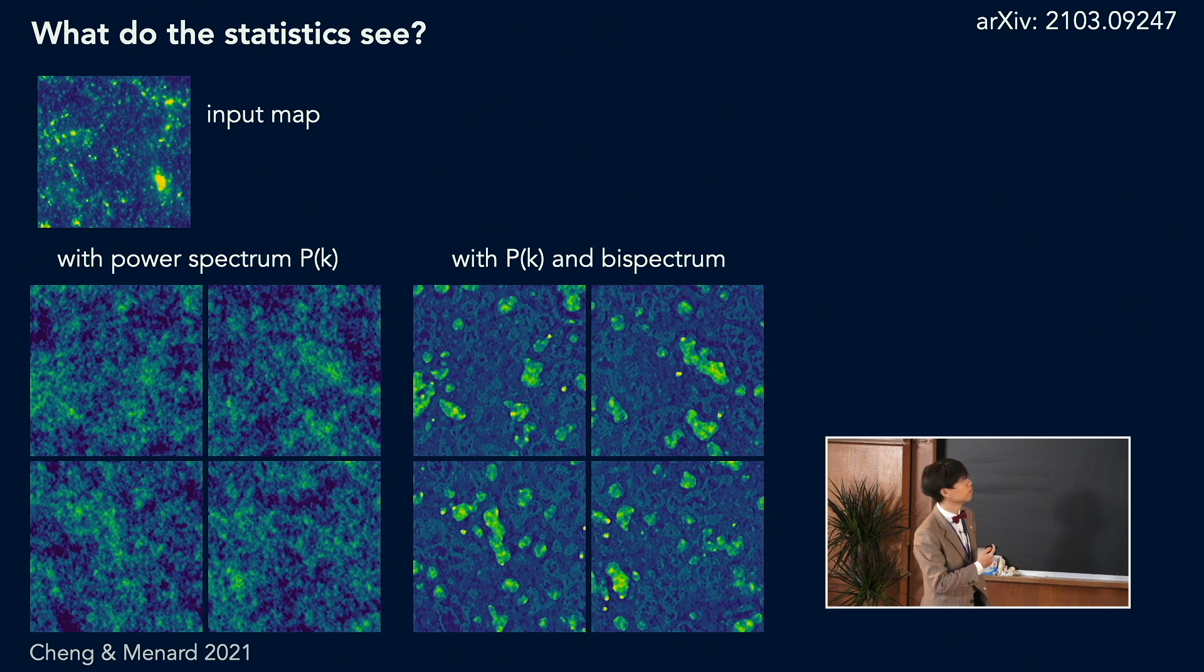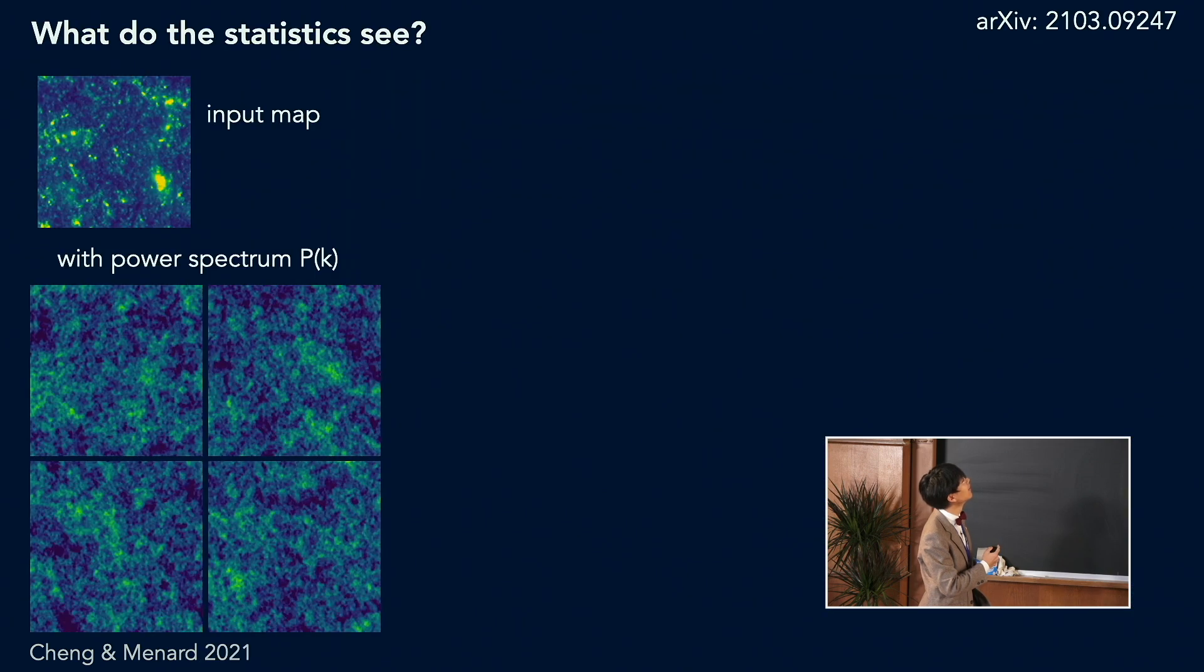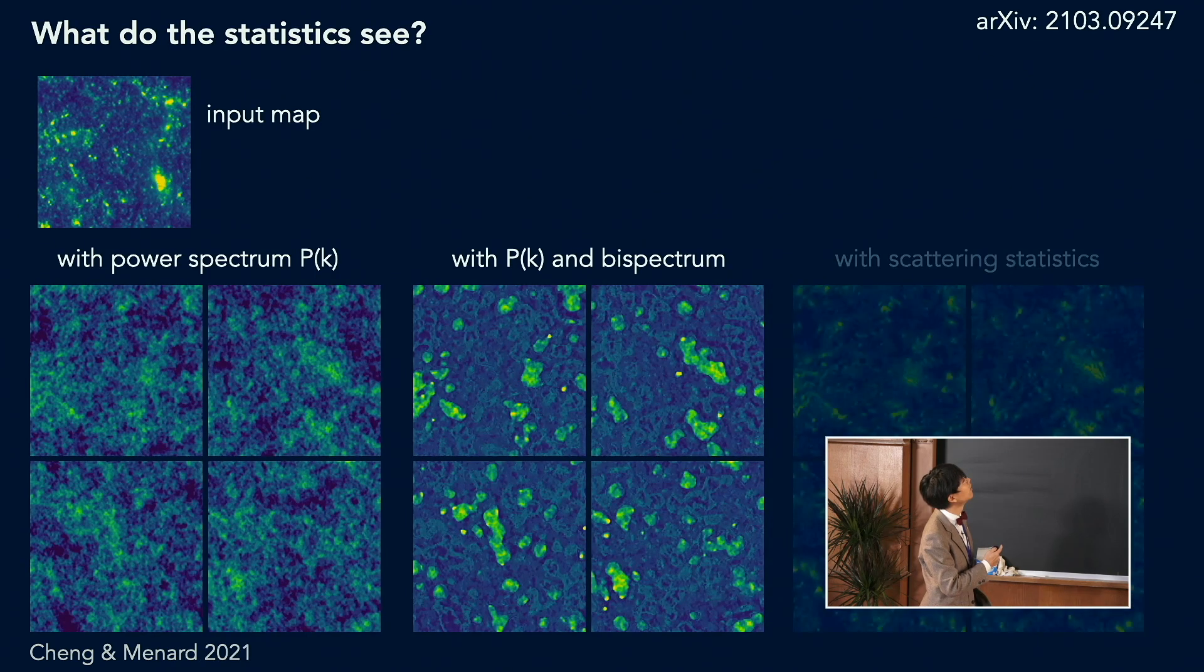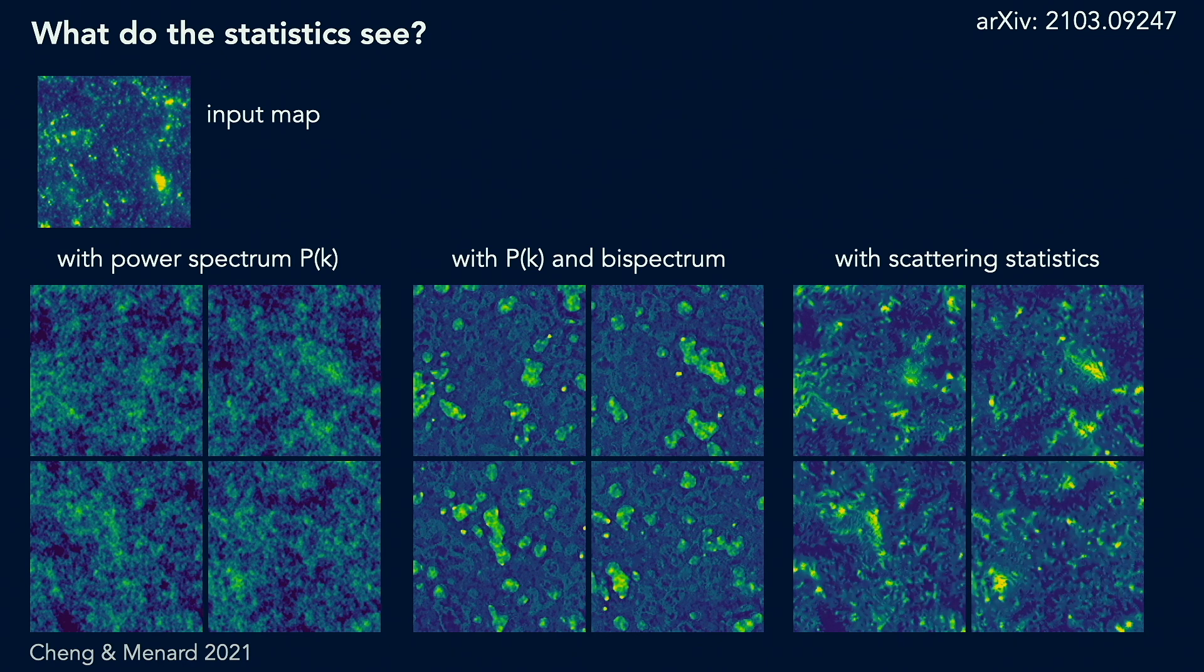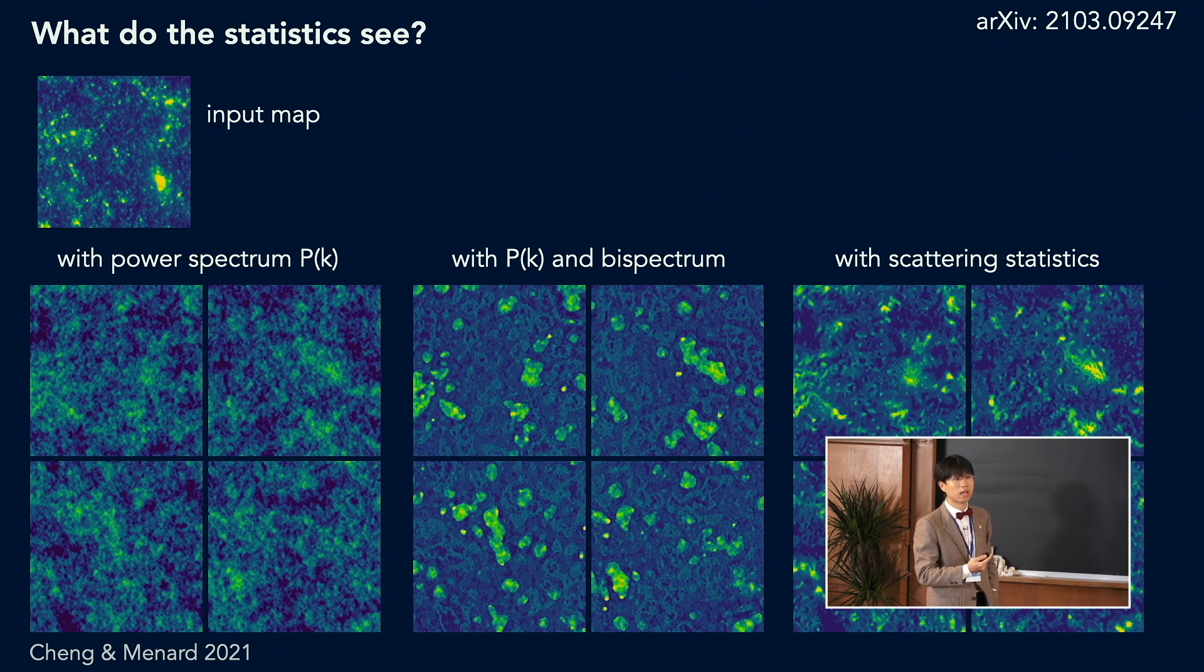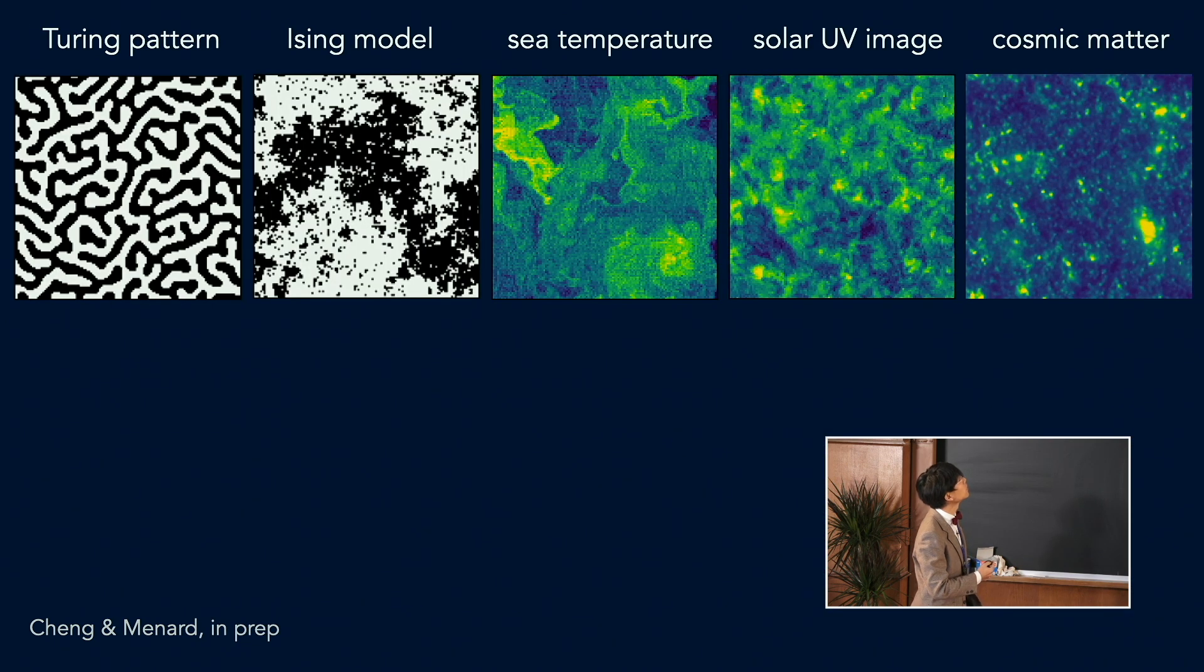So what about the scattering transform? As you can see, here is the texture generated from the scattering coefficient. You can see the textures are very similar to the input field. And in order to do this, you just need about 50 translation invariant coefficients. So I think this strongly suggests that the scattering transform or scattering coefficients is highly efficient to characterize properties of physical fields.